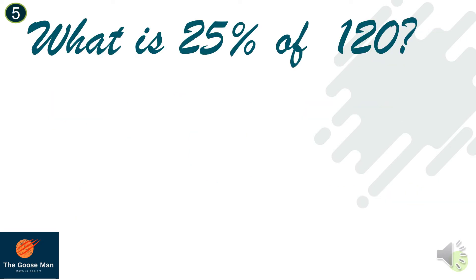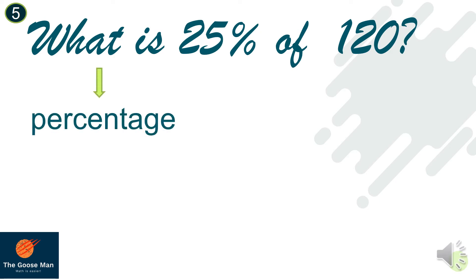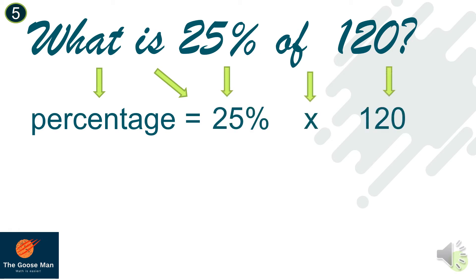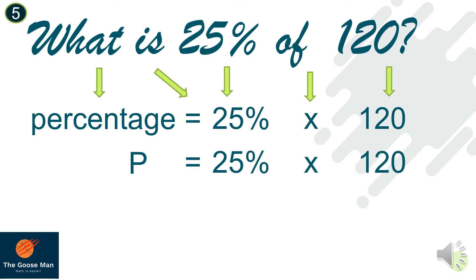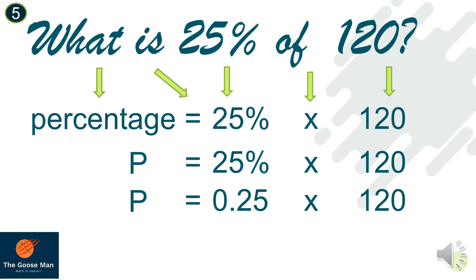Now that you have an idea on identifying percentage, base, and rate, let's try to solve this word problem. What is 25% of 120? Percentage equals 25% times 120. I can rewrite 25% as a decimal: 0.25 times 120. So the percentage is equal to 30.